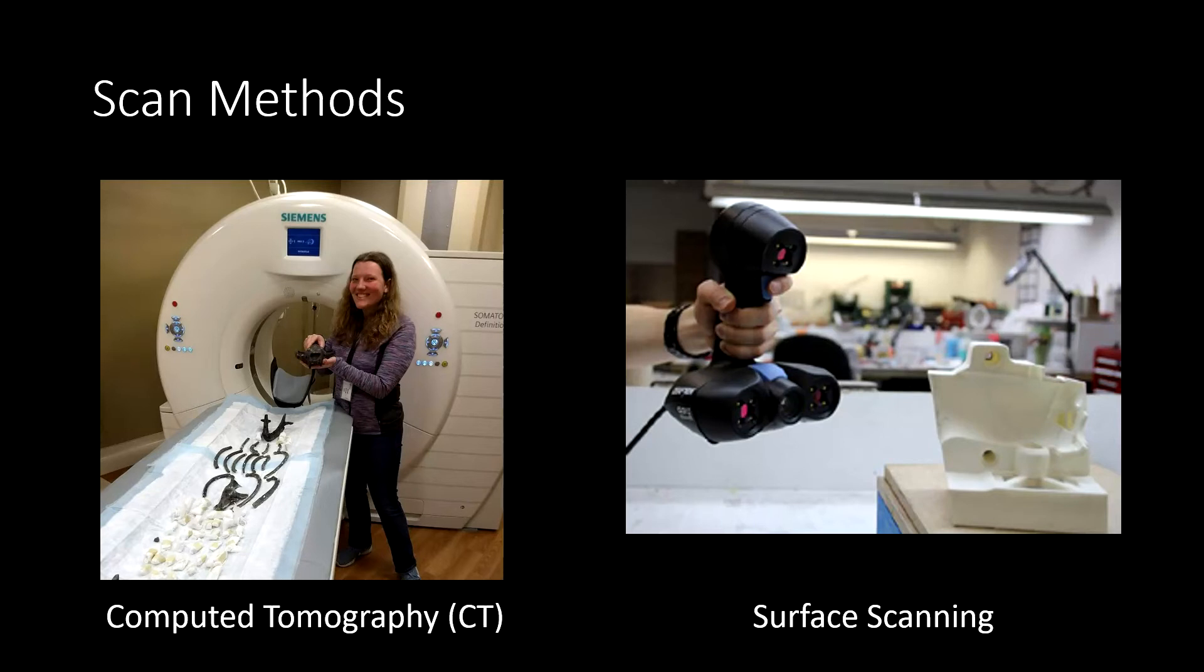A third scan method you may have heard of is photogrammetry, where you take photographs of an object from many different angles and stitch them together. However, I'm not going to be covering this in this series because the methods used with photogrammetry are very different than the methods I will be showing you throughout this series.